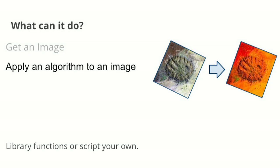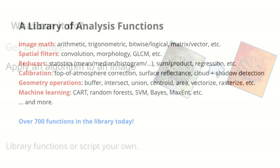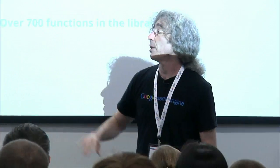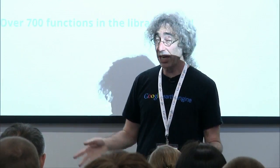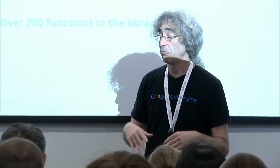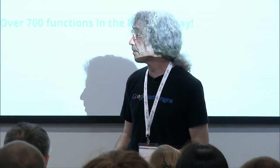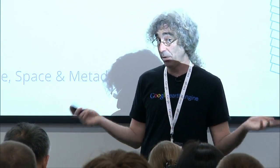The next thing you can do with the API is apply an algorithm to an image. We have lots of algorithms that are built in, and you can use these to build your own. There are image math algorithms, calibration algorithms, and classifiers. There are over 700 functions, and you can use them to build your own analyses.